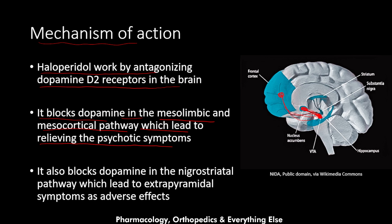Psychosis and schizophrenia occur when dopamine levels in the mesolimbic and mesocortical pathways increase. Haloperidol works to decrease dopamine levels in those pathways, thus providing relief from psychotic symptoms. It also blocks dopamine in the nigrostriatal pathway, which leads to extrapyramidal symptoms as adverse effects. This pathway connects the substantia nigra with the striatum and putamen, which are parts of the basal ganglia. Inhibiting dopamine here leads to extrapyramidal symptoms such as dystonia, dyskinesia, and tremor, which are side effects of the medication.